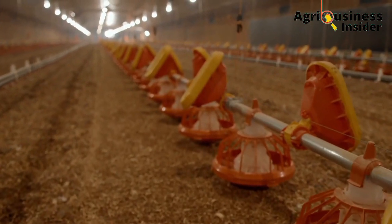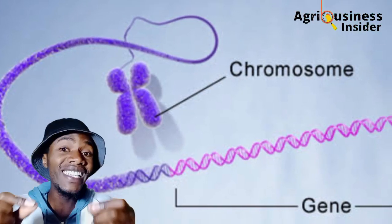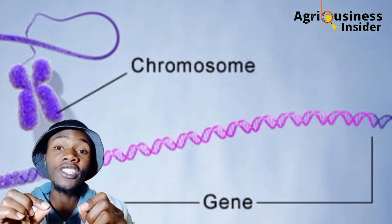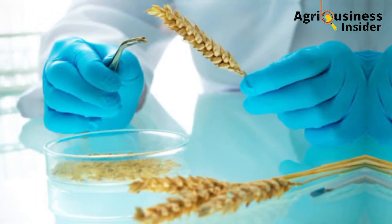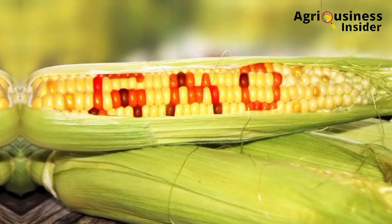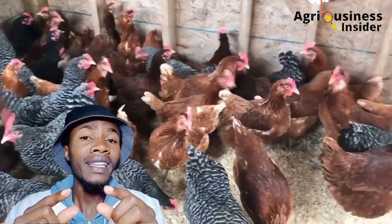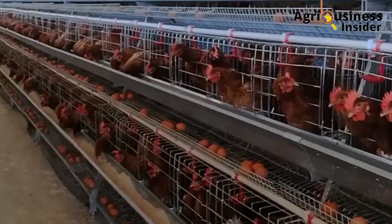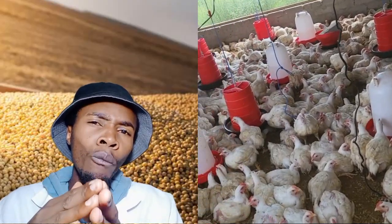To understand what GMO is, you must understand what a gene is. A gene is the basic physical and functional unit of heredity, found in each and every cell, carrying the information of how each cell is going to develop physically and function physiologically. What scientists do in genetically modified organisms is take a gene — for example, a gene of maize — and alter it using another gene, for example from a bacteria, through genetic engineering techniques, to produce the desired physical development and physiological function.